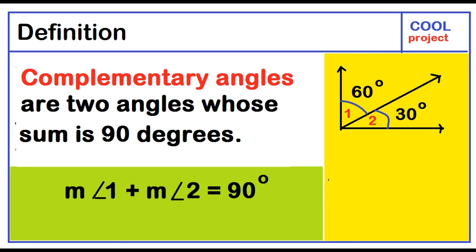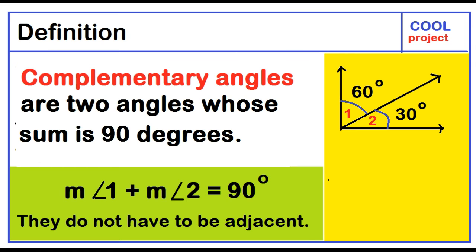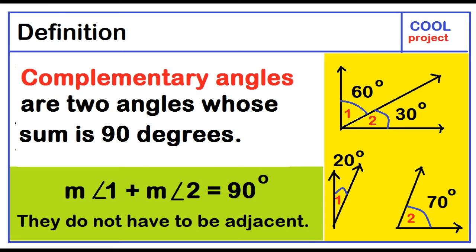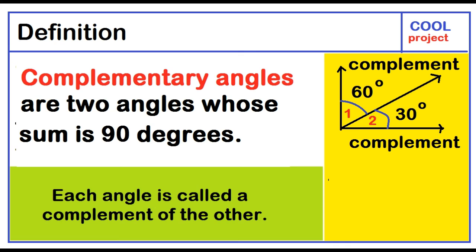Complementary angles are two angles whose sum is 90 degrees. The measure of angle 1 plus the measure of angle 2 equals 90 degrees. Complementary angles do not have to be adjacent. For example, 60 degrees plus 30 degrees equals 90 degrees, and 20 degrees plus 70 degrees equals 90 degrees. Each angle is called a complement of the other.